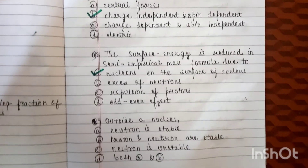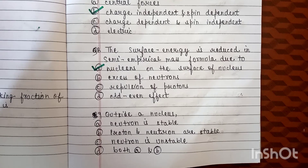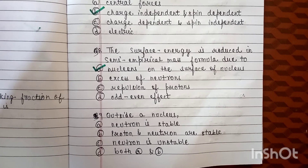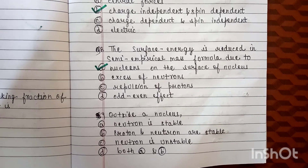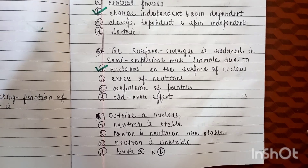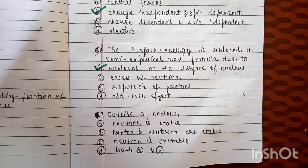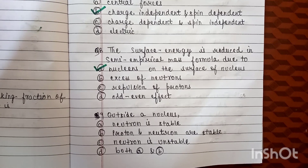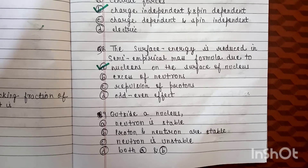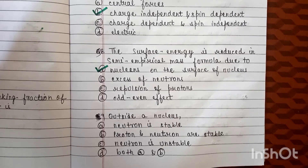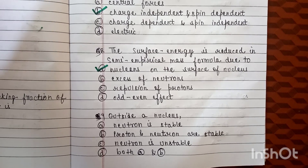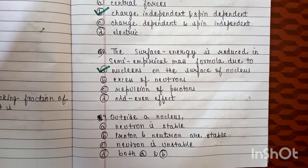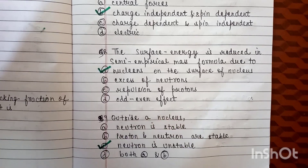Question number 9: outside a nucleus — Option A: neutron is stable. Option B: proton and neutron are stable. Option C: neutron is unstable. Option D: both A and B. Outside a nucleus, neutron is unstable, option C.